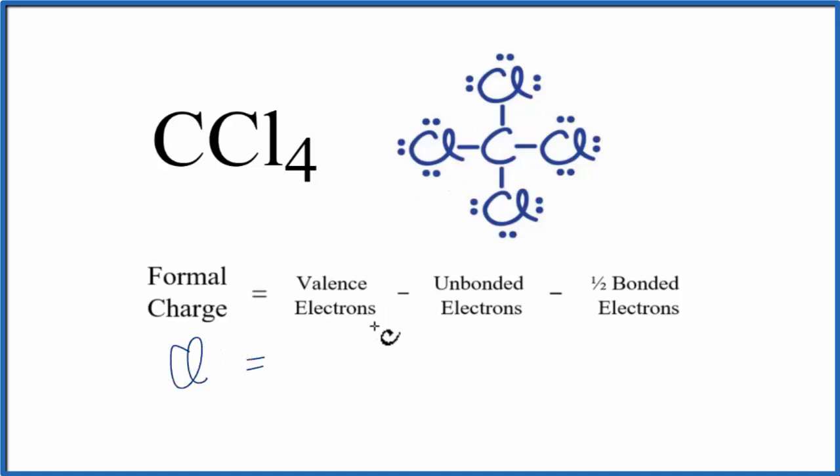So chlorine, that's in group 17, sometimes called 7a. It has 7 valence electrons.